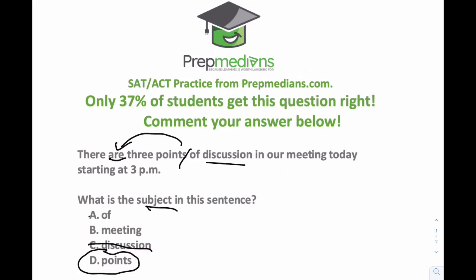So it can't be 'discussion,' can't be 'of,' and then we have 'meeting' all the way over here. If I change 'meeting' to the plural, 'meetings,' does that mean I need to change the verb 'are'? 'There are three points of discussion in our meetings' — no, maybe we just have plural meetings, multiple meetings that day, probably all over Zoom knowing the current state of the world. So in that case, again, it doesn't have an impact on 'are.' The only one that actually impacts 'are' — by changing the plurality of the noun that is the subject from plural to singular — is the only one that impacts the verb here.